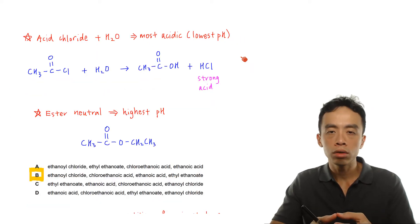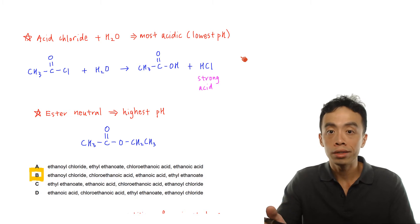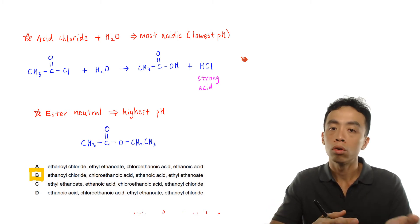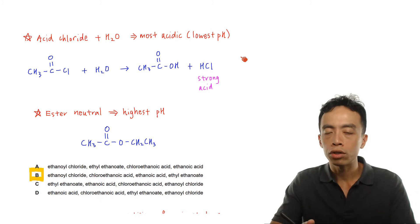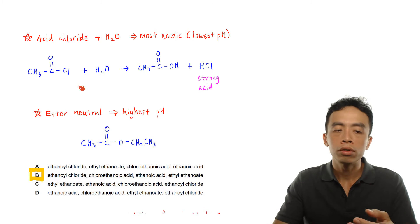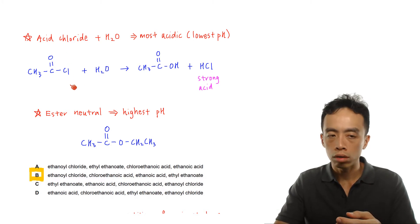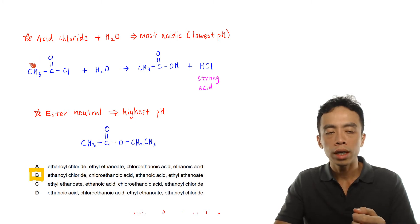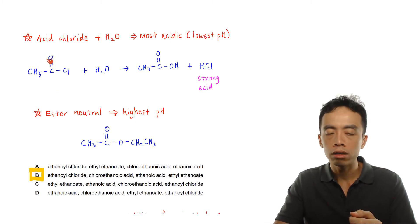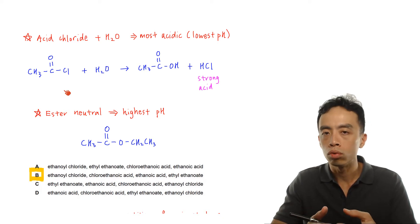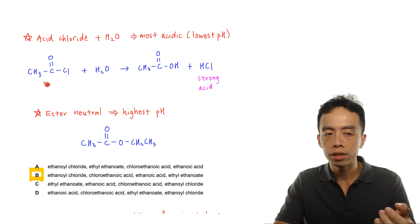Let's consider acid chloride first. Acid chloride by itself is neutral because if you consider this functional group, for an acid it's supposed to be a proton donor or H⁺ donor. Looking at this acid chloride, it's not capable of donating H⁺ because it doesn't have any proton to donate. The only hydrogen present is attached to carbon, so this CH₃ is not capable of being a proton donor.